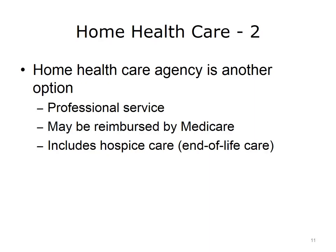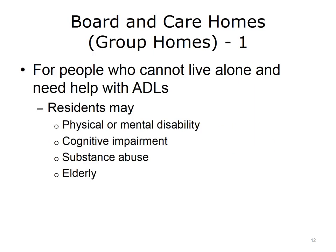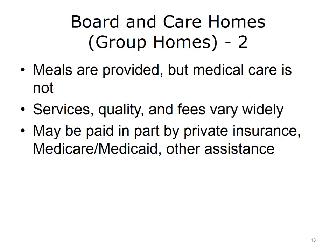Home health care agencies can also provide hospice or end-of-life care. Group homes, often called board and care homes, are group living arrangements for people who need help with activities of daily living and are not able to live alone but do not need nursing care. Residents may have physical disabilities, mental or developmental problems, mental illness, cognitive impairment, or substance abuse. Not all residents are elderly. Meals are included at board and care homes but medical services are not. Services, quality, and fees vary widely, and group homes may be licensed or not. Sometimes private insurance, Medicare and Medicaid, or other assistance programs help pay for care.